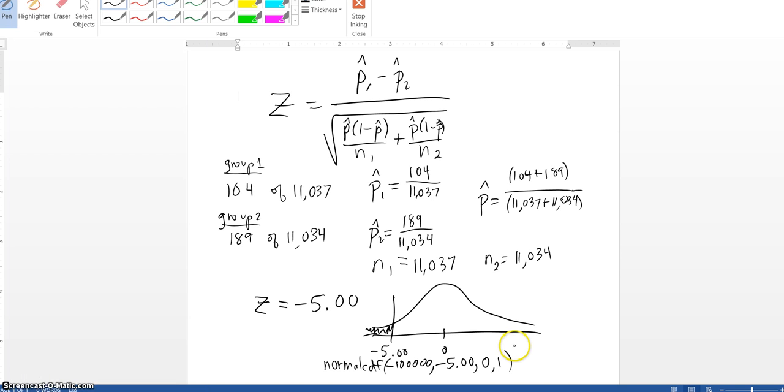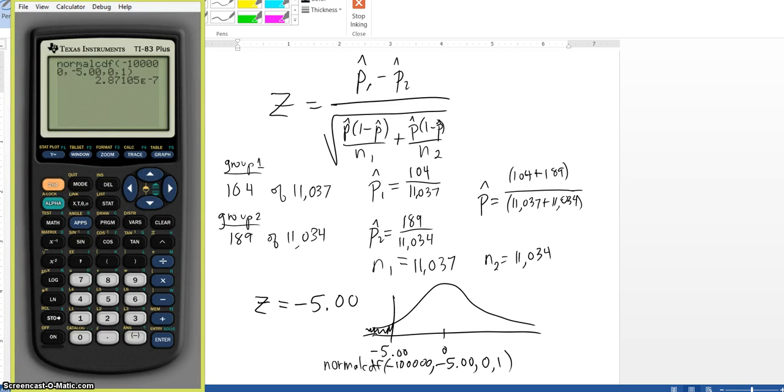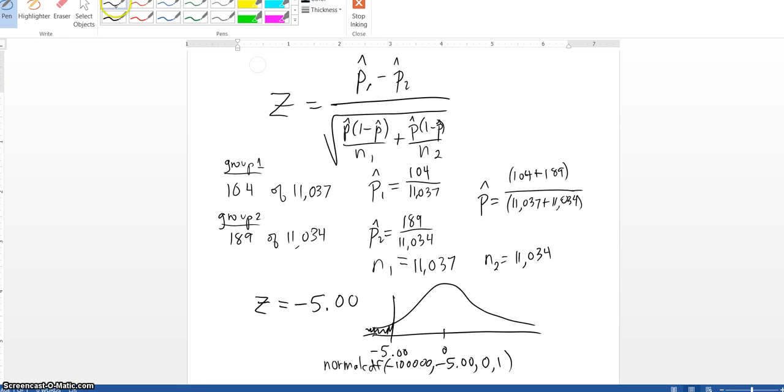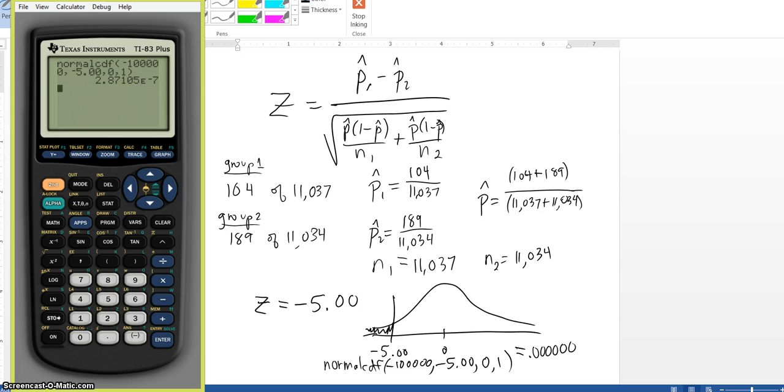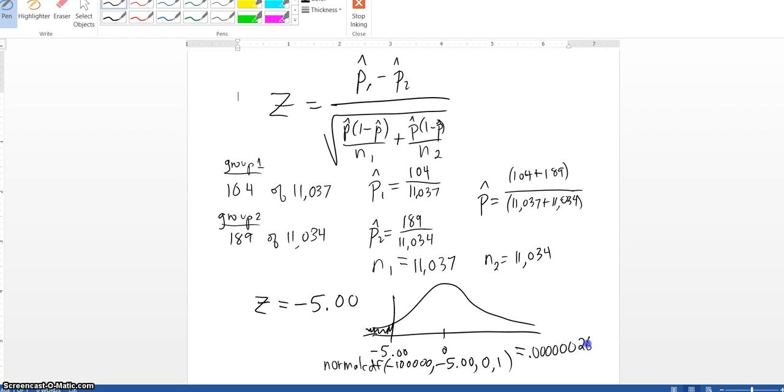And that gives me 2.87 times 10 to the negative 7. So, what this is equal to... This is 0.123456 zeros, and then 2.87. This is my P value.